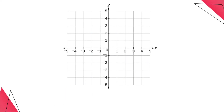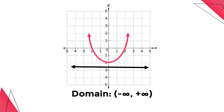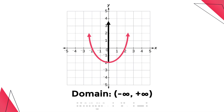For example 3, since the graph extends infinity to the left and right, the domain is a set of all real numbers. However, the range starts at negative 2, including negative 2, and goes up infinitely. The interval notation is represented by open bracket negative 2, comma, positive infinity, close parenthesis.